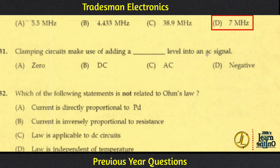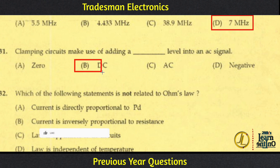A clamping circuit adds a DC level to an AC input signal. The clamping circuit takes an AC signal and adds a DC level to the input signal.